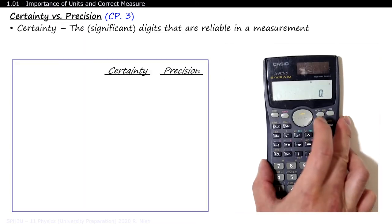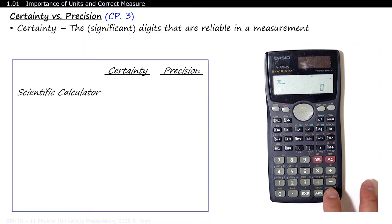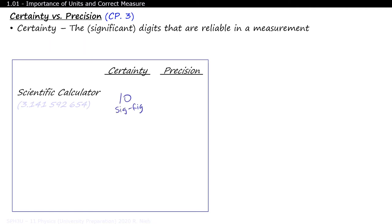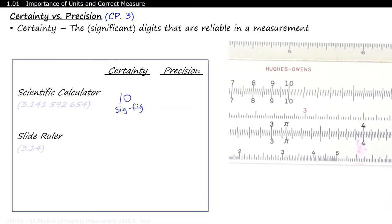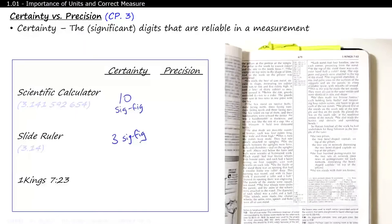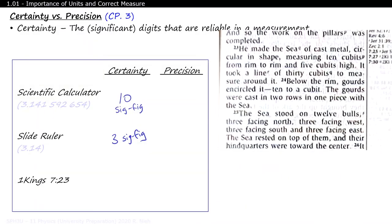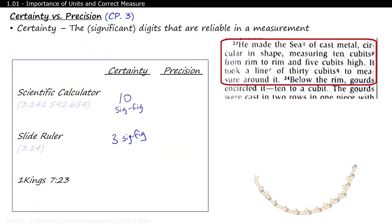There is a difference between certainty and precision. The certainty of a measurement shows the reader which digits in your measurement can be reliably used. For example, this scientific calculator is confident of showing pi to 10 digits. So this value of pi has 10 significant figures. This slide rule, on the other hand, shows a value of roughly 3.14. So it has a certainty of 3 significant figures. In 1 Kings of the Old Testament, it describes a metal basin with a circumference of around 30 arm lengths and a diameter of around 10 arm lengths, essentially describing pi as roughly 3, or to a certainty of 1 significant figure.